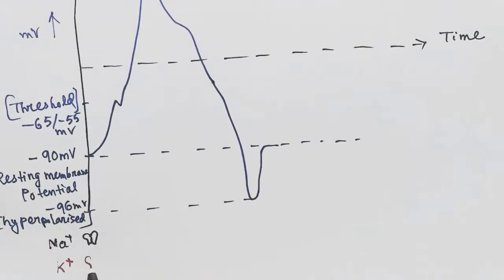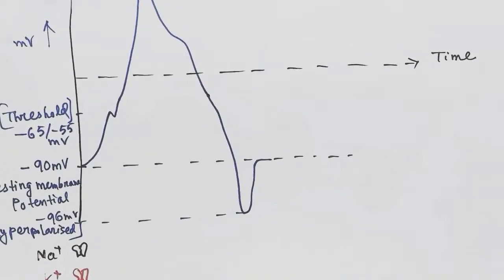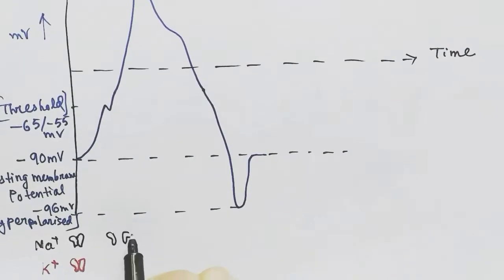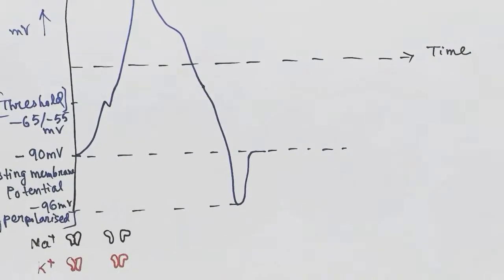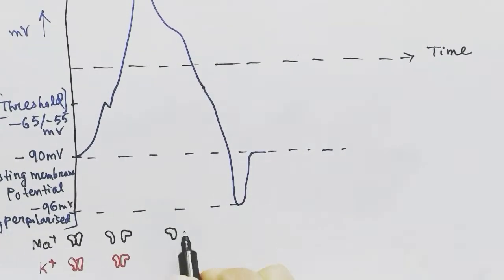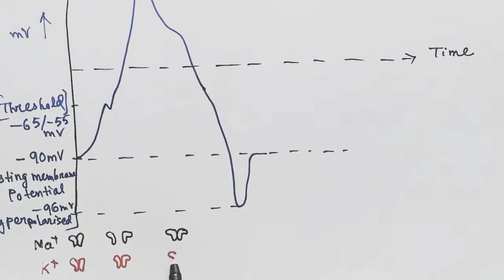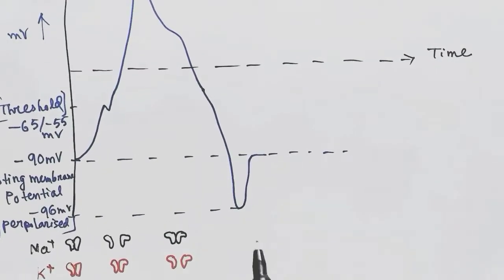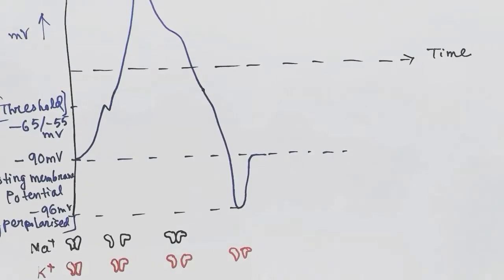At resting membrane potential, all gates are closed. At threshold, only sodium channels are open. After reaching the peak, the sodium channel closes and potassium channels open. After hyperpolarization, all channels are closed again.